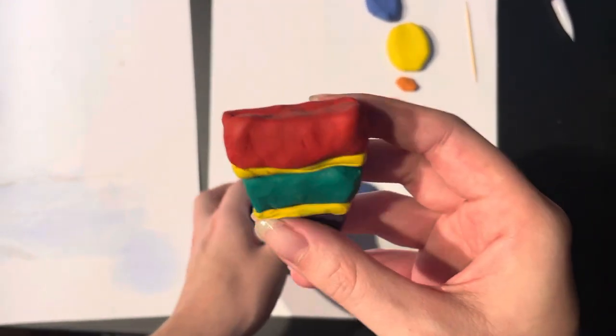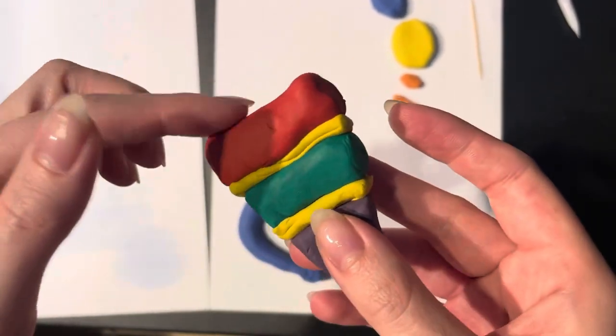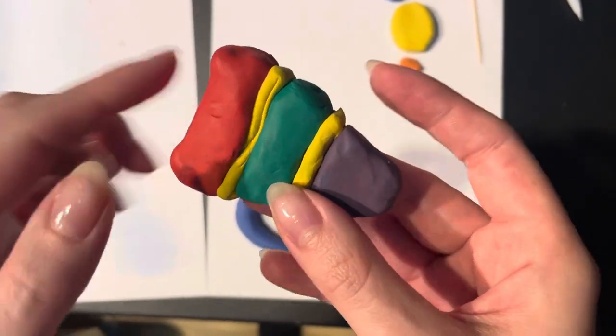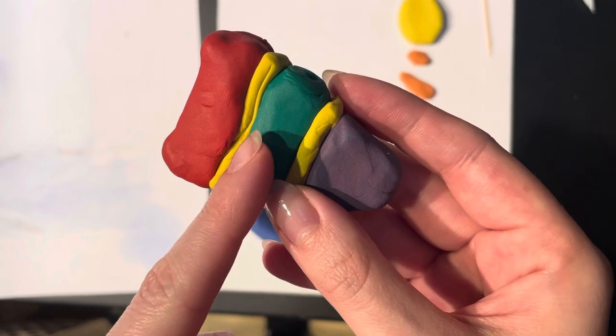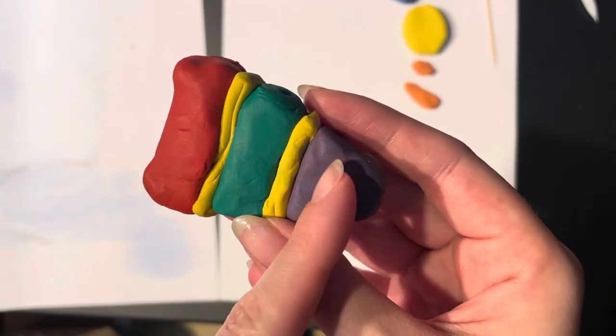The lenticular nucleus is made up of the putamen on the outer edge, the external globus pallidus, and the internal globus pallidus.